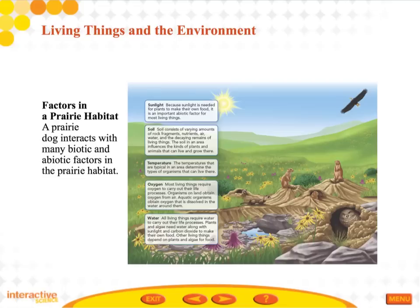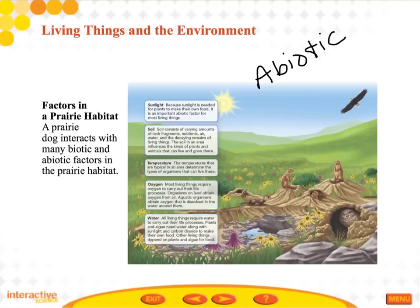Take a look at this picture — this is a prairie habitat. We have some prairie dogs here. There are various things within this habitat, both abiotic and biotic, that the organism interacts with. All of the items listed here are abiotic factors because they are not living organisms. Sunlight, soil, temperature, oxygen, and water are all part of this habitat but they're not living organisms, so they are abiotic.